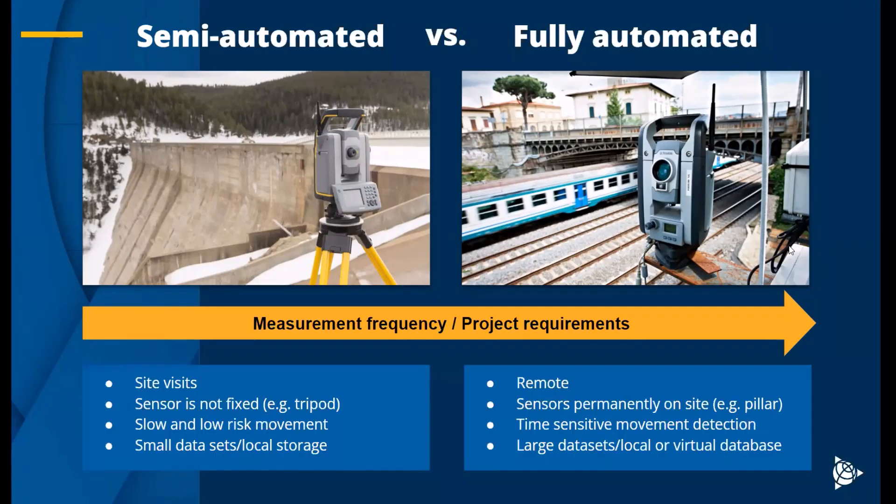You're going to choose semi-automated or fully automated based on the project requirements. Sometimes it makes more sense to have a semi-automated workflow where somebody's going out, setting up the total station, measuring these targets. That's really going to be for your low frequency or typically lower duration projects, where it makes more sense to just go out, set up, measure, pack it up, go home, come back six months later and do the exact same thing.